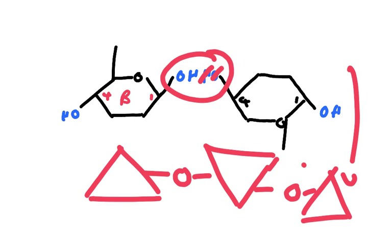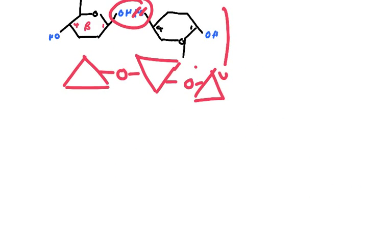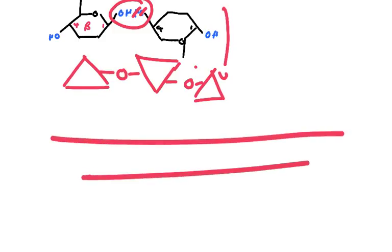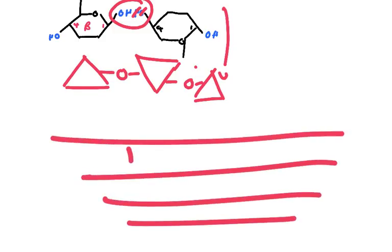As they form long straight chains of cellulose, those chains have hydrogen bonds between them. Lots of hydrogen bonds, and those hydrogen bonds give it tensile strength. These are known as microfibrils.